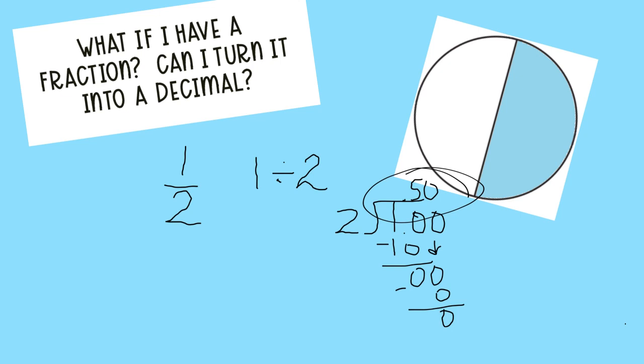We have proved by division that one half is equivalent to 50 hundredths. And you can do that with any decimal.